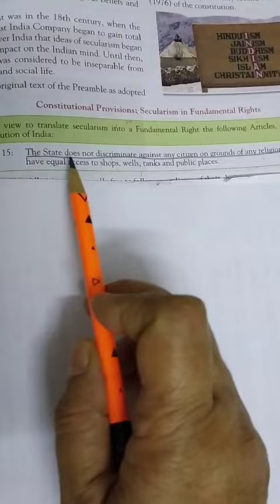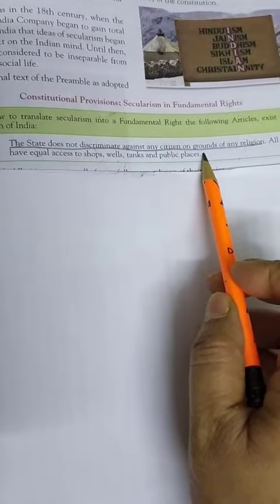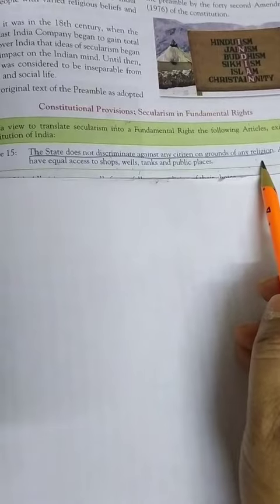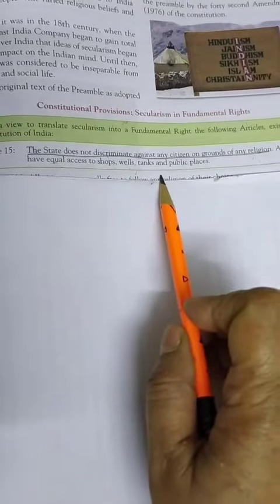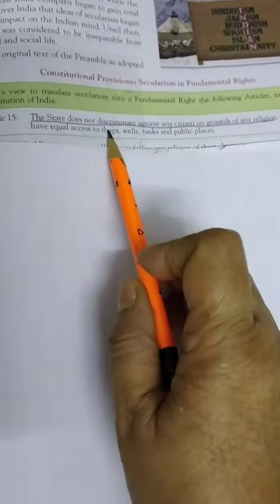Article 15: The state does not discriminate against any citizen on ground of any religion. जो state है, किसी भी person के साथ धर्म को लेके discriminate या भेदभाव जो है, वो नहीं कर सकता.